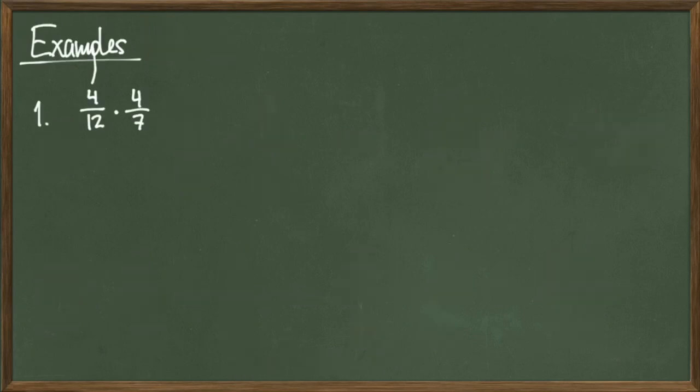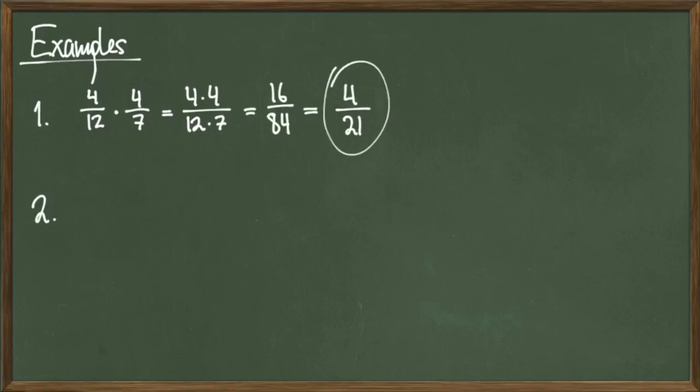Let's look at some examples. First, consider the fraction multiplication 4 over 12 times 4 over 7. Multiplying across gives me 4 times 4 over 12 times 7, which simplifies to 16 over 84, which simplifies further to 4 over 21 when I delete the common factor of 4 in the numerator and the denominator.